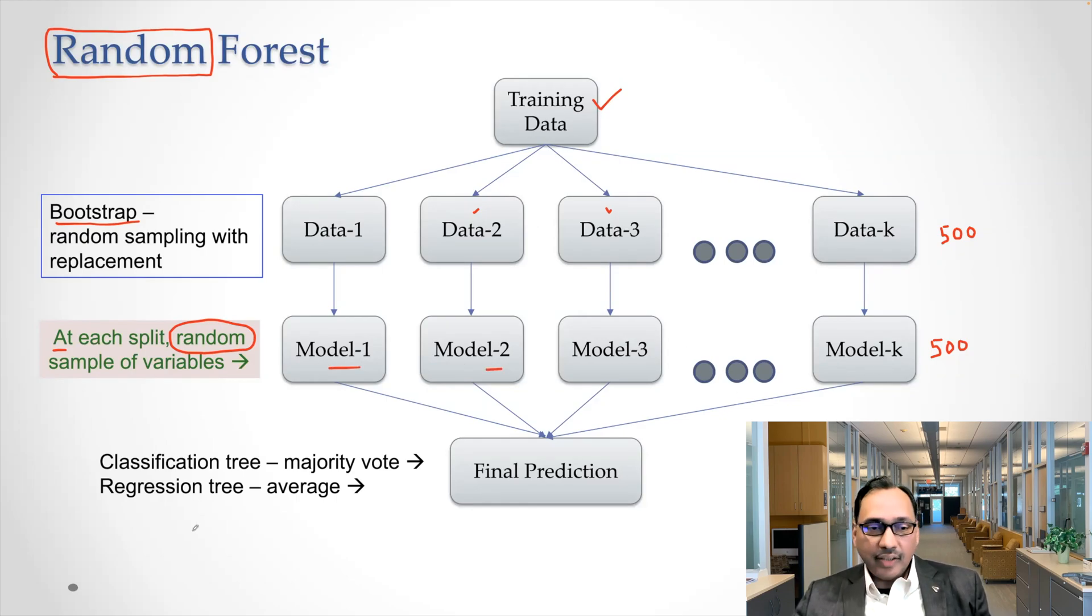Once you have like 500 trees, the idea is same. You average the MEDV values and call that as a final prediction. So we are talking about predicting the value for each row in the data. So when you are making that prediction, that is your final prediction. But if you are doing classification tree, then instead of averaging, we take the majority vote. So that's the only difference between classification and regression, but the idea is same.